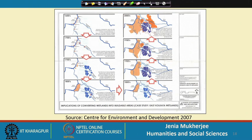This is another map prepared by the Centre for Environment and Development — a 2007 map which shows, from the 1600s to contemporary times, the changing or transforming trajectory of blue infrastructure in Kolkata. One single picture captures the transforming tales of waterscapes of this area.